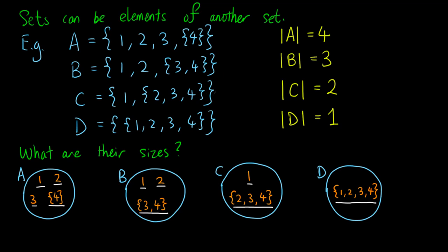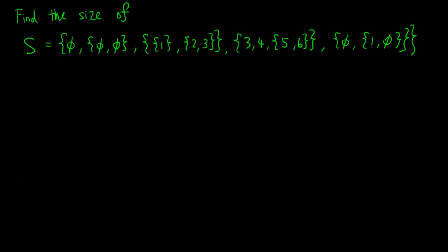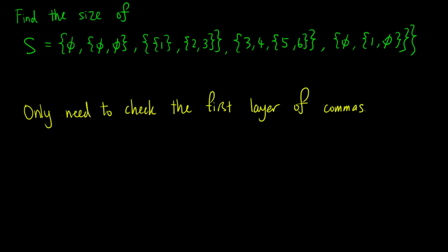Here, 1, 2, 3 and 4 are just some irrelevant information inside the element of D. Now let's find the size of this complicated-looking set. The trick here is to only look for things separated by the first layer of commas. Let's change the colour of these commas to emphasise. The elements of the set can be underlined as follows. Without actually caring what those underlined elements are, I just need to count the number of lines drawn. Since I have drawn 5 lines, the size of S is 5.